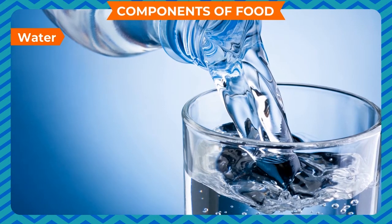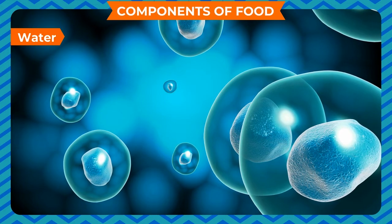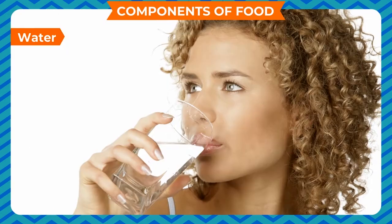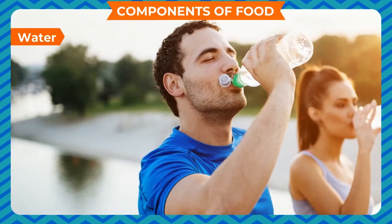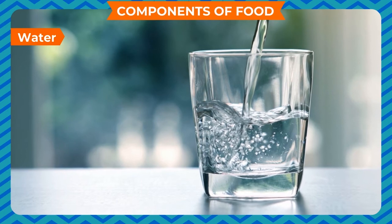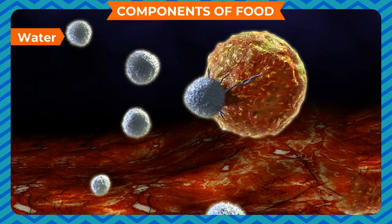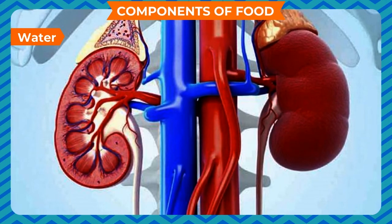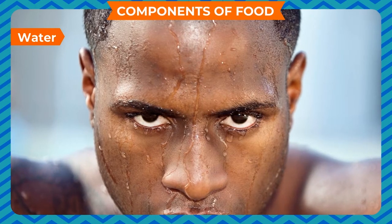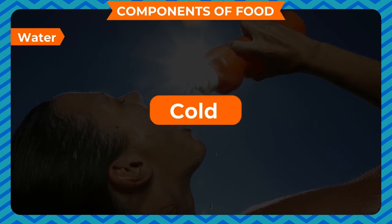Water makes up almost 70 percent of our body weight. Most of it is present in the cells of our body. Water constitutes the liquid part of the blood, called plasma. Life processes cannot occur without water. It plays a vital role in all functions of our body — it helps absorb nutrients from food, transports nutrients throughout the body, and collects wastes from different parts of the body, removing them as urine and sweat. Sweat helps in regulating our body temperature.